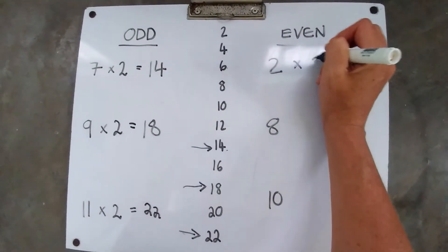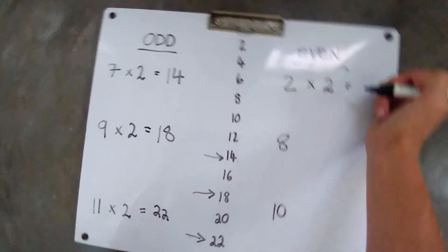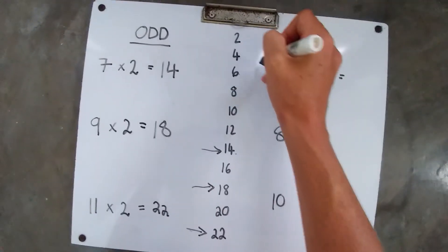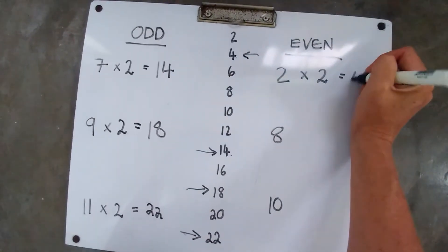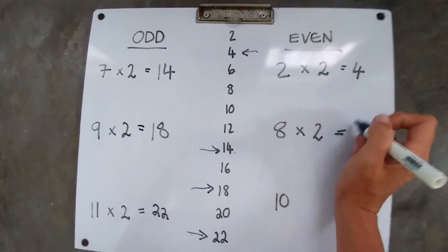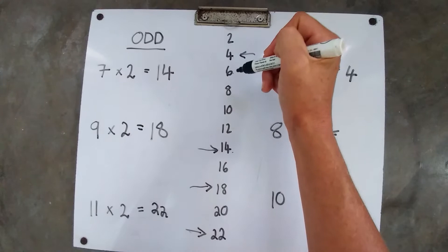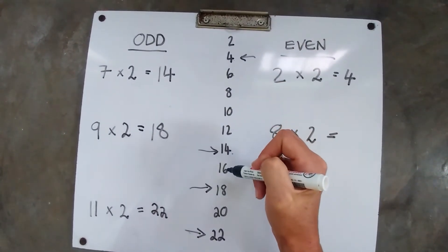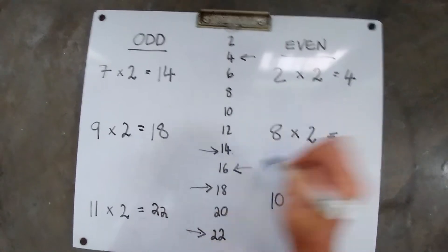What about 2? Our even numbers. We're going to count 2 of them. 1, 2. That gets me to 4. Now we're going to count 8 2's. 1, 2, 3, 4, 5, 6, 7, 8. 16.